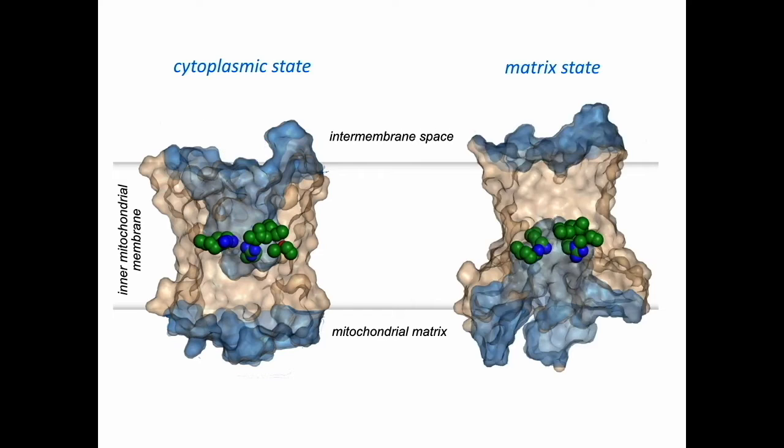We present the structure of the carrier in the matrix state, which is open to the mitochondrial matrix for binding of ATP. This structure shows that the same binding site is accessible in both states, which proves that ADP and ATP bind to the same site.